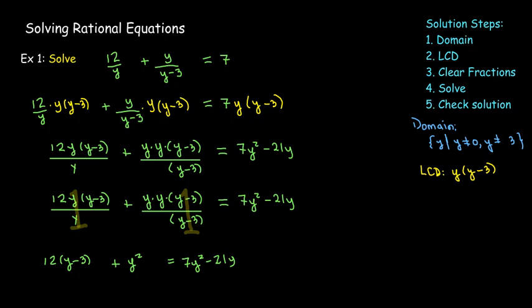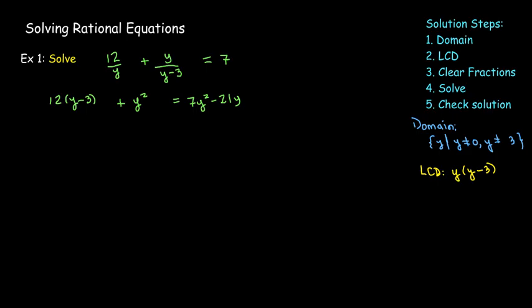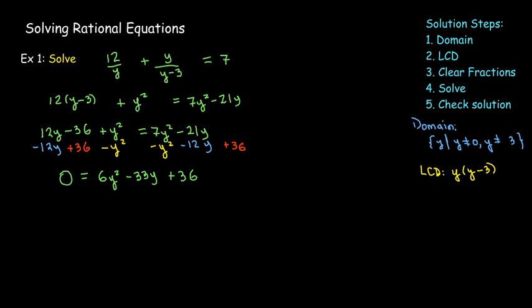We left off with 12 parentheses y minus 3 plus y squared equals 7y squared minus 21y. This is a quadratic equation, so I'm going to make one side equal to 0, and let's see if I can factor it. First I'll remove these parentheses, then I'll do some balancing. I'll subtract 12y, I'll add 36, and subtract y squared from each side, giving me 0 equals 6y squared minus 33y plus 36. Those are some big numbers that look intimidating, but we have a common factor of 3.